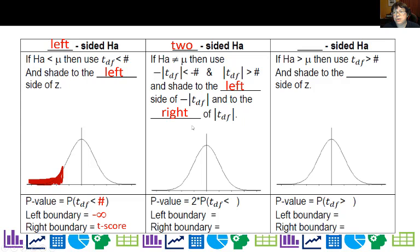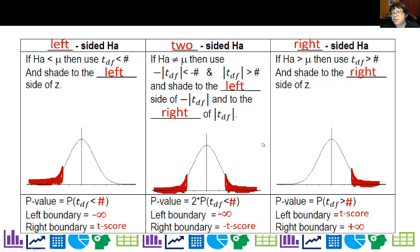If you have a two-sided, you're pretty much going to shade left and right, okay? And your left boundary, well, if you do just this left piece, you can do negative infinity to whatever that negative t-score is and double it, or you can do the right side and double it. But you do need to double it for a two-sided. For a right-sided, you will do to the right, and you're going to have your t-score at the lower level and infinity at the top when you run tcdf.